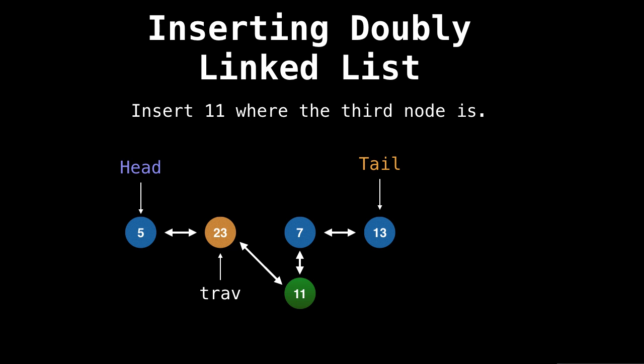And last step, make 23's next pointer equal to 11. This is so that we can go forwards from 23 to 11. So in total, remark that we changed exactly four pointers. So if we flatten out the list, you can see that 11 has been inserted in the correct position.